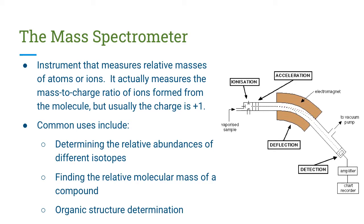In this video, we are going to talk all about the mass spectrometer as well as mass spectrometry and how we can apply that to solving the structure of organic compounds. The mass spectrometer is an instrument that measures the relative masses of atoms or ions. What it's actually measuring is a mass-to-charge ratio of ions formed from the molecule, but the charge is typically plus one, so we relate the values to just a mass.